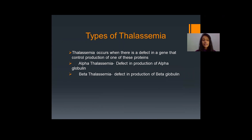When we look at the types of thalassemia, it occurs when there is a defect in a gene that controls production of either the alpha-globin or beta-globin protein. If the defect is in the gene involved in production of alpha-globin protein, the condition is known as alpha-thalassemia. If the defect is in the gene involved in production of beta-globin protein, the condition is known as beta-thalassemia. That is how thalassemia is categorized into two types.